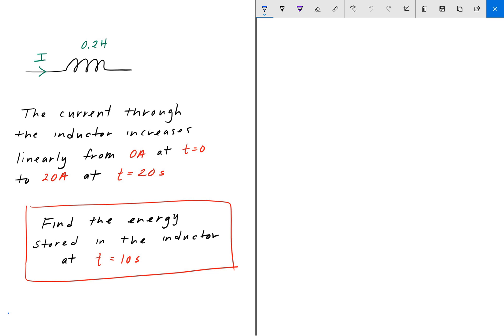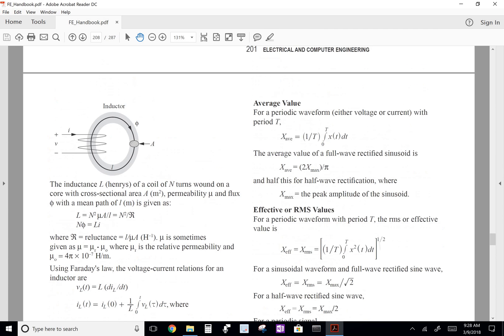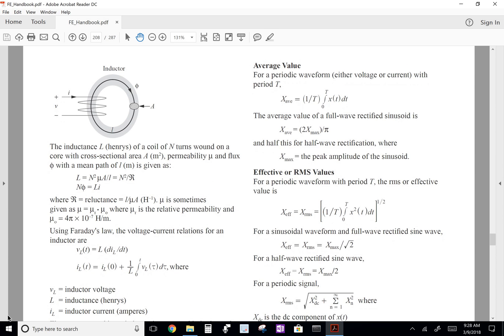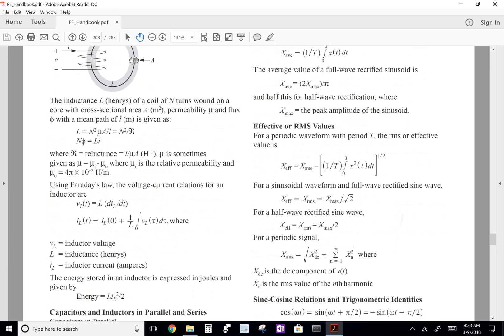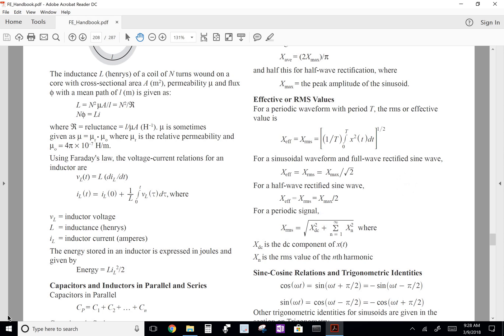In order to solve this, we turn to the FE handbook. On page 202, we have an inductor section, and if we scroll down just a bit, we have a formula here for energy. The energy stored in an inductor expressed in joules is given by one-half L I squared, where I is the inductor current in amps and L is the inductance of the inductor.